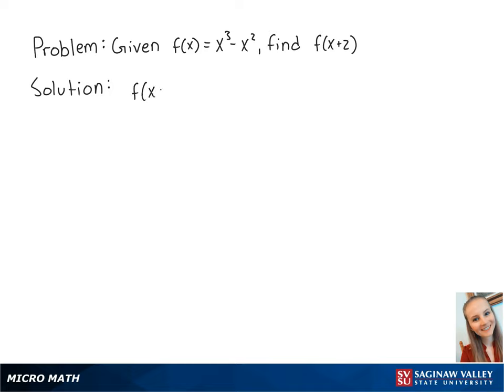To find f of x plus 2, we need to plug in x plus 2 for x. So this is equal to x plus 2 cubed minus x plus 2 squared. This is equal to x plus 2 times x plus 2 times x plus 2 minus x plus 2 times x plus 2.